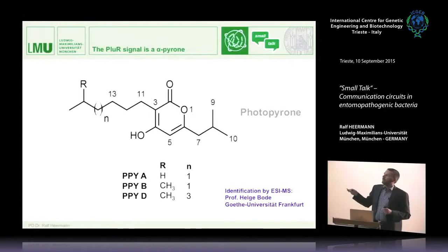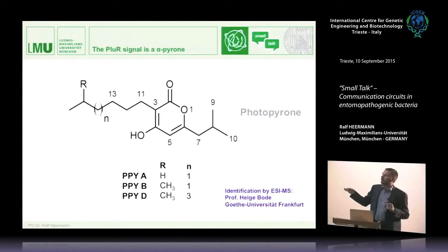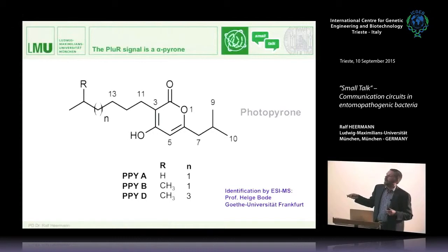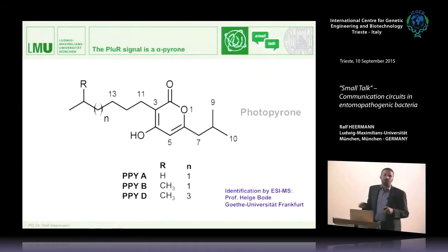We have a great collaboration with the group of Helge Bode in Frankfurt, who work with secondary metabolites of entomopathogenic bacteria. They performed electrospray ionization mass spectrometry on our fractions and identified the structure of the signaling molecule. This is not a homoserine lactone — it's a different structure. The blue ring signal is an alpha pyrone. At first view it looks somewhat similar — there's also a ring modified with hydrophobic side chains — but it is chemically different. In the three bioactive fractions, we had different modifications of this molecule, and we named these molecules photopyrones, because they come from Photorhabdus. The three derivatives are PPY-A, PPY-B, and PPY-D. We had thus discovered in Photorhabdus luminescens another kind of bacterial language, not previously known.